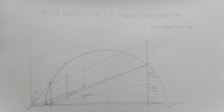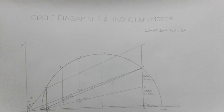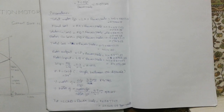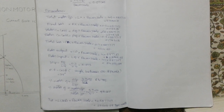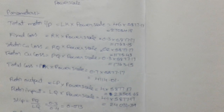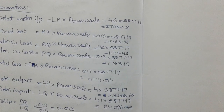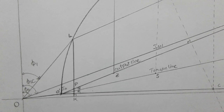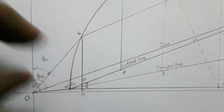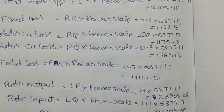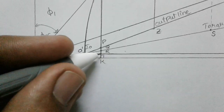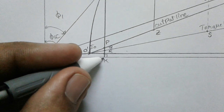This is the final circle diagram of the three-phase induction motor. Now calculate the parameters from the diagram. Total motor input equals LK multiplied by the power scale, giving 27034.18 watts. Fixed losses equal RK multiplied by the power scale, giving 1763.15 watts. In the circle diagram, R and K are the respective points used for this measurement.